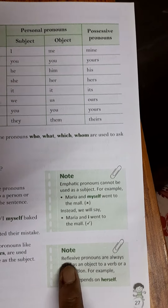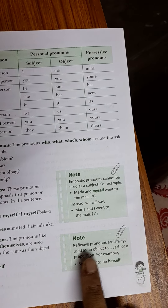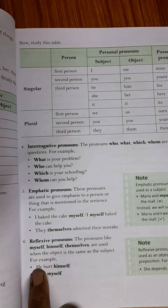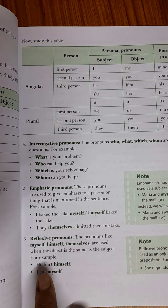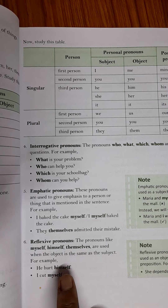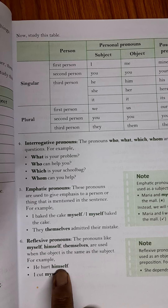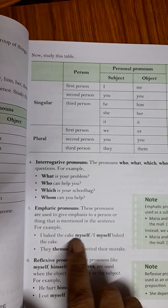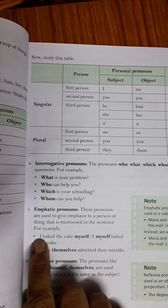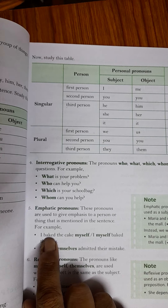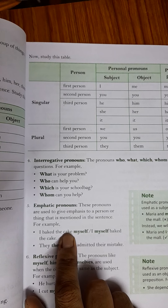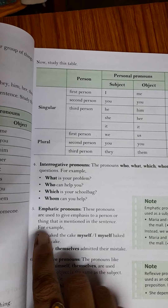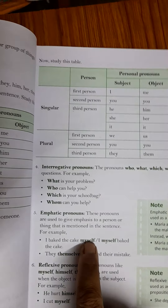Reflexive pronouns are always used as an object to a verb or a preposition. So in 'He hurt himself': 'he' is the subject, 'hurt' is the verb, and 'himself' is the object. Now in 'I baked the cake myself': 'I' is the subject, 'baked' is the verb, 'the cake' is the object, and 'myself' is emphasizing 'I.'